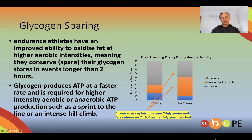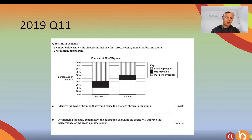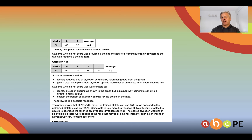Glycogen sparing is another benefit of aerobic training. Endurance athletes have an improved ability to oxidise fats at higher aerobic intensities, which means they conserve their glycogen for later in a race — particularly handy for events that go beyond two hours. There was a question in last year's exam on glycogen sparing. Hopefully you identified that aerobic training results in glycogen sparing, and the benefit is that you have glycogen available for higher intensity efforts later in a race.